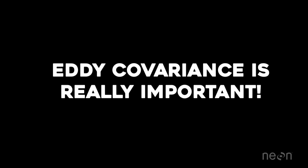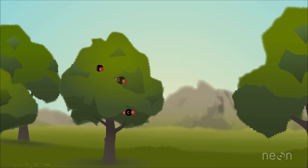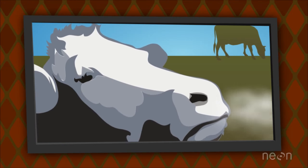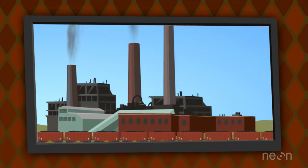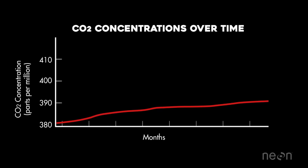Eddy covariance measurements are really important because they are the most conclusive method for measuring how much CO2 and other gases are taken in by photosynthesis, and also emitted into Earth's atmosphere from things like respiration, geologic emissions, thawing permafrost, and human activity. Documenting these gas exchanges is important to understand trends in atmospheric concentrations.